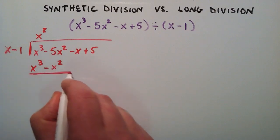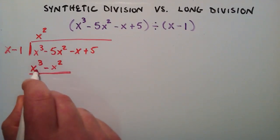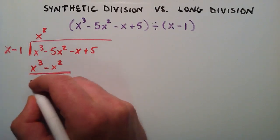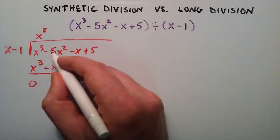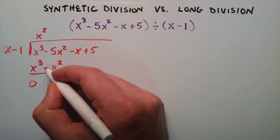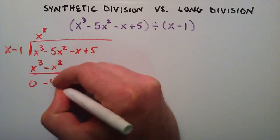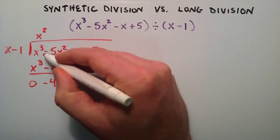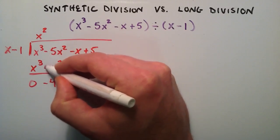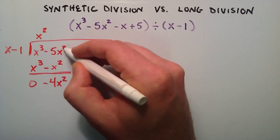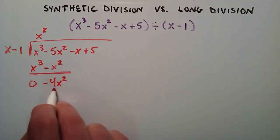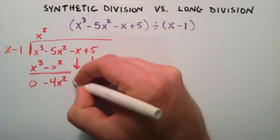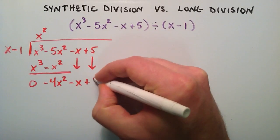The next step is we simply subtract this from the polynomial. So x to the third minus x to the third gives us zero. Negative five x squared minus a negative x squared — we need to be careful here because we're subtracting, so this is really negative five x squared plus x squared, which gives us negative four x squared. Then these next two terms we just drop down: negative x and plus five.